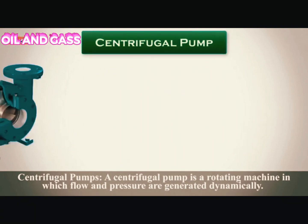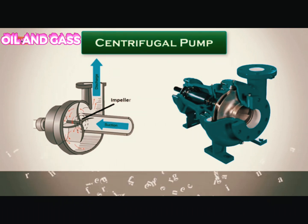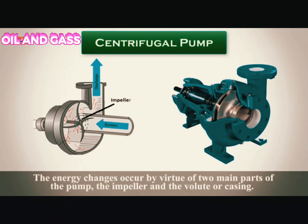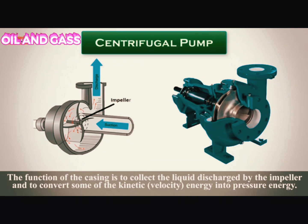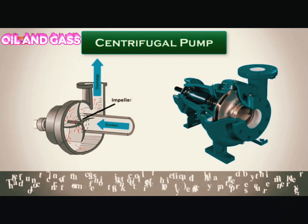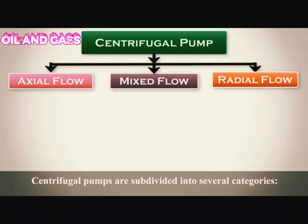Centrifugal pumps. A centrifugal pump is a rotating machine in which flow and pressure are generated dynamically. The energy changes occur by virtue of two main parts: the impeller and the volute or casing. The function of the casing is to collect the liquid discharged by the impeller and to convert some of the kinetic energy into pressure energy. Centrifugal pumps are subdivided into several categories.